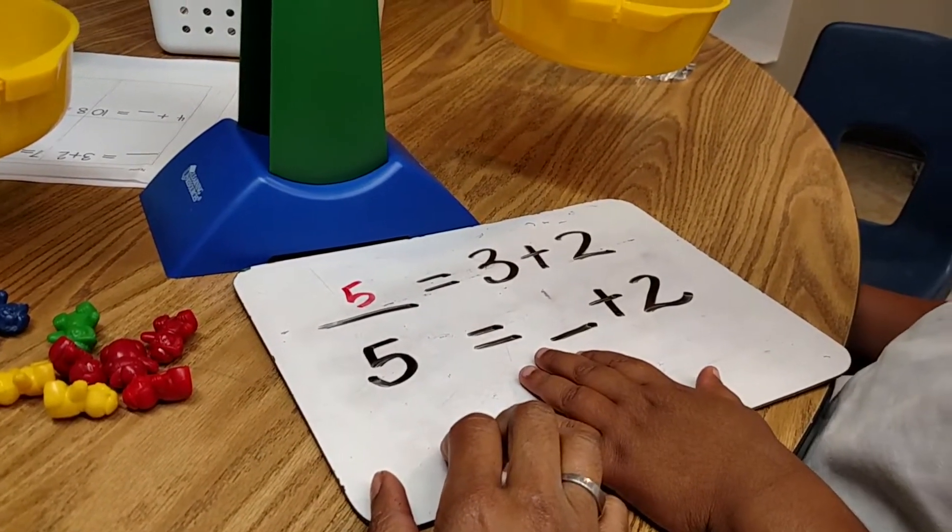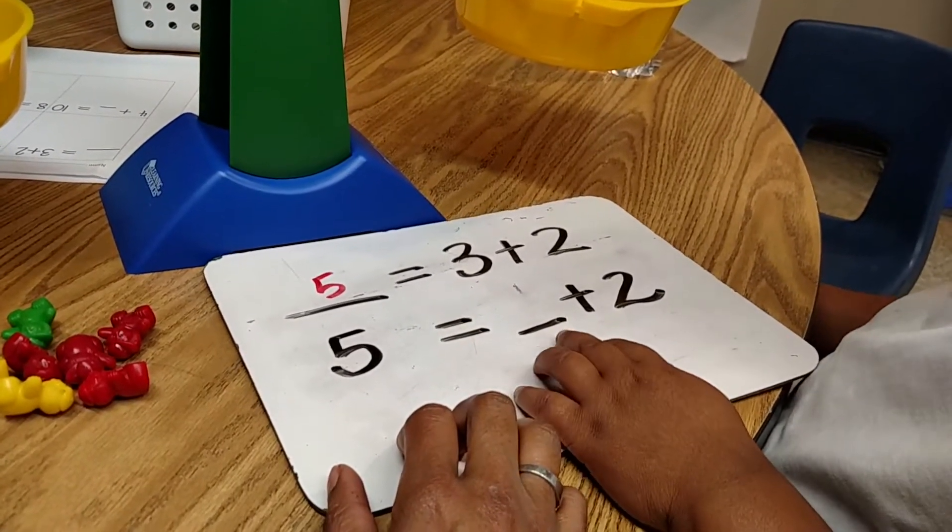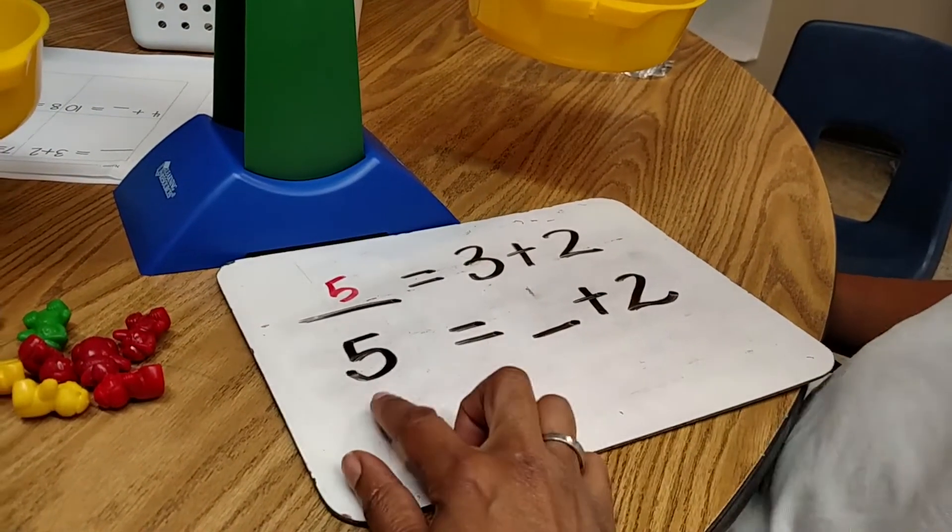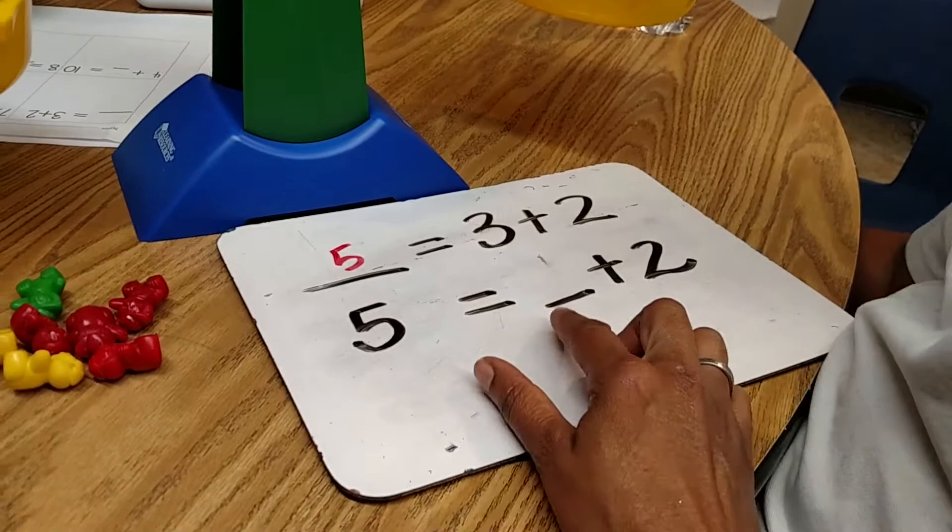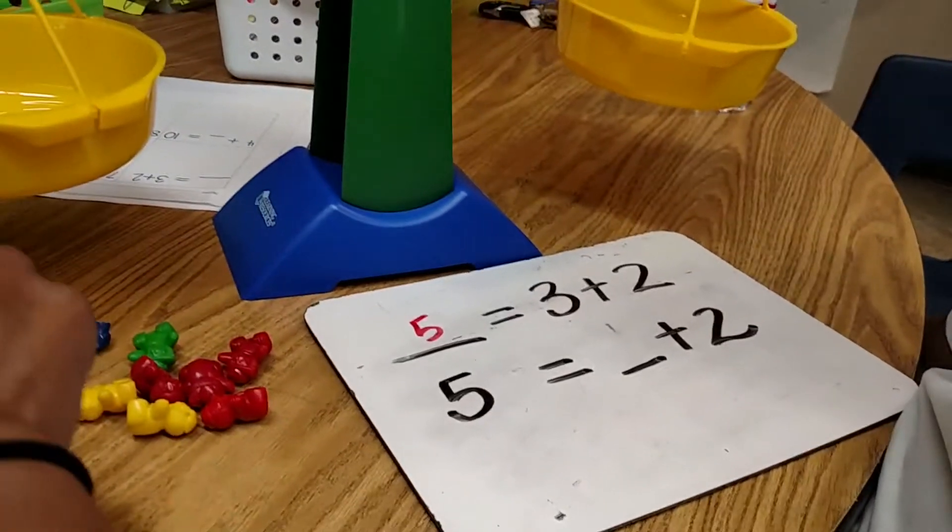Five minus... Is the same as? Equals... Nothing plus two. Yeah, so five is the same as blank plus two. So we have to figure out how many are going to go on this side of the scale.